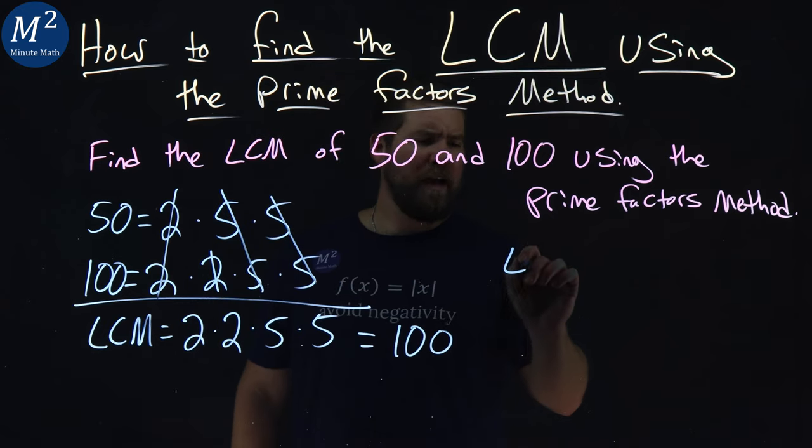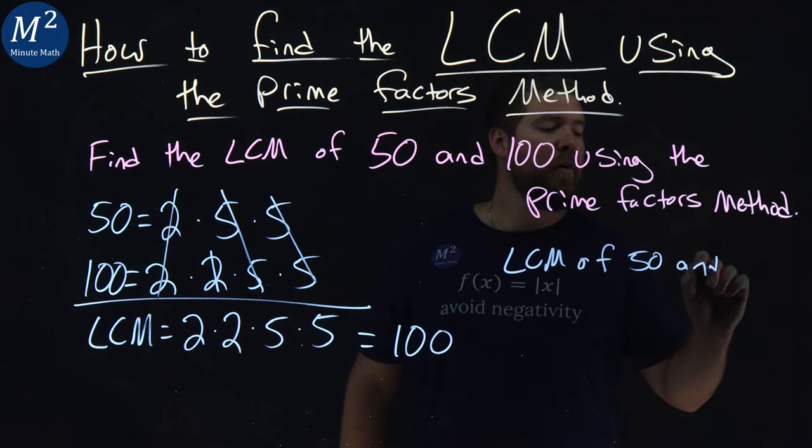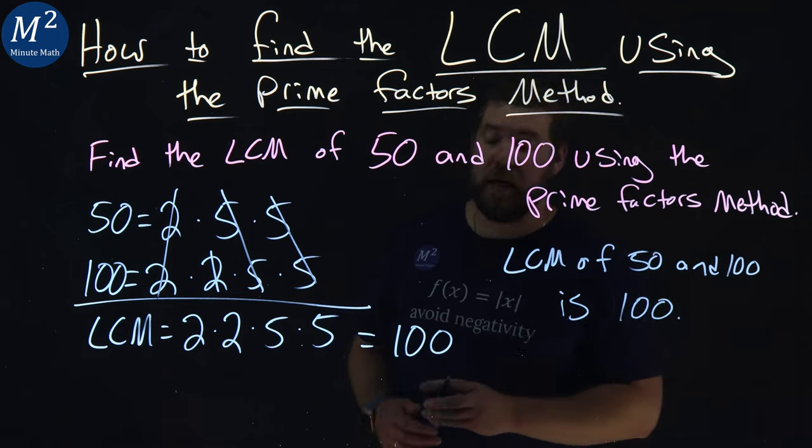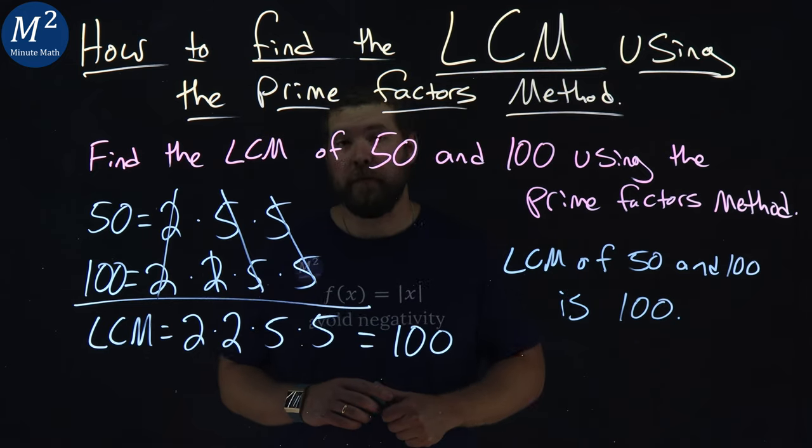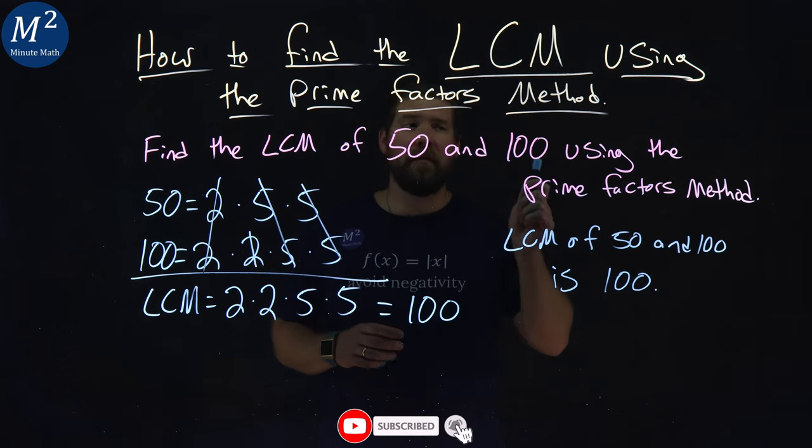And so, the LCM of 50 and 100 is 100, and this can happen sometimes, that the LCM of two numbers is one of the numbers itself.